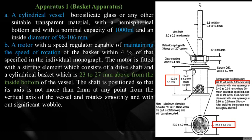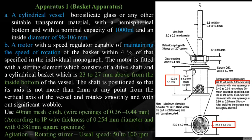The shaft axis must not deviate more than 2 mm from the vertical axis of the vessel at any point. Rotation should be smooth with no significant wobble. The basket consists of a 40-mesh cloth with wire openings of 0.36 to 0.44 mm. According to IP, wire diameter is 0.254 mm and openings are 0.381 mm square. According to USP, wire diameter is 0.25 mm, basket length is 37 ± 3 mm, and outer diameter is 25 ± 3 mm.